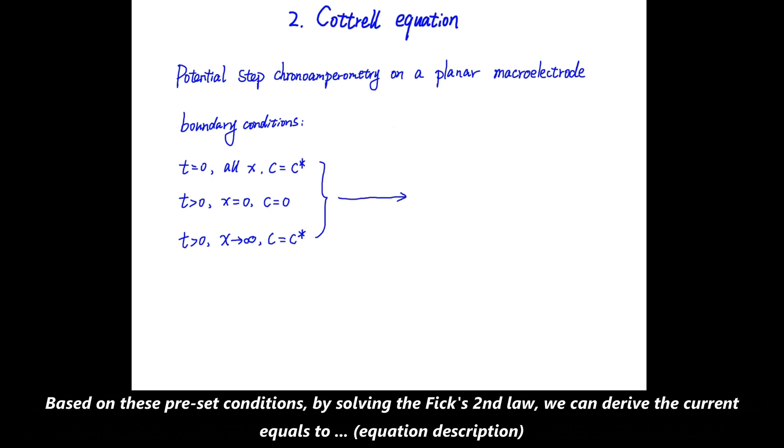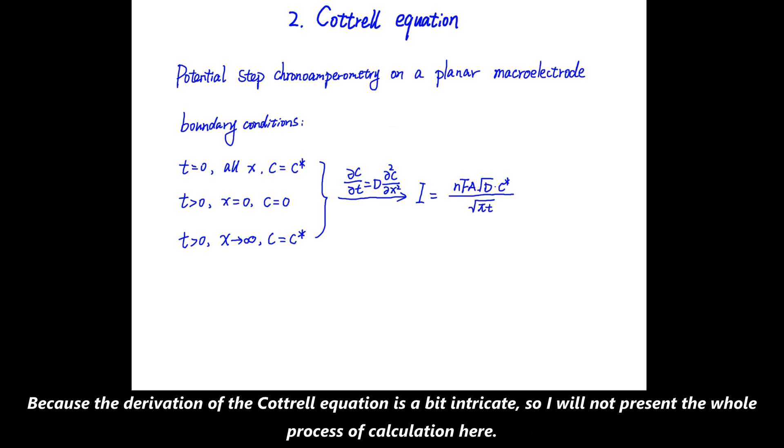the current equals nFA√(D·C*)/(√(πt)). n is the number of electron transfers during the elementary process, F is the Faraday constant, A is the electrode area, D is the diffusion coefficient, and C* is the bulk solution concentration of material of interest.